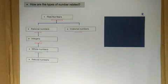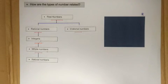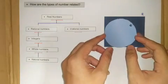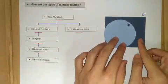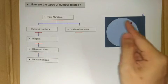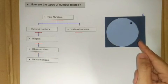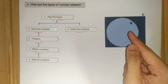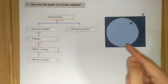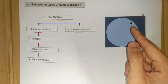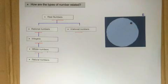Real numbers are either rational or irrational. The area outside the circle is what we call irrational numbers, and inside the circle is what we call rational numbers, denoted with capital Q.